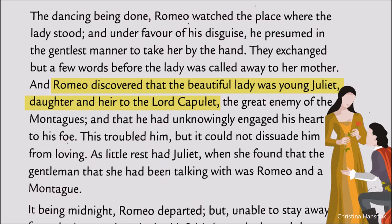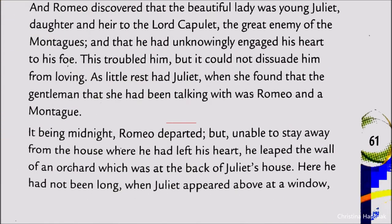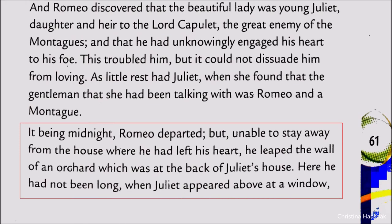On the other hand, Juliet also came to know that the person with whom she had spoken some words was none other than Romeo of Montague. Now it was almost midnight, and it seemed impossible for Romeo to leave that house.